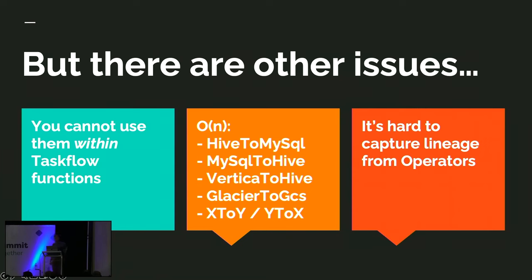Then we have kind of a big-O problem too. We have a myriad of operators called Hive to MySQL, MySQL to Hive, Vertica to Hive, Glacier to GCS, GCS to Glacier — essentially X to Y, and Y to X. That creates, interestingly enough, what you would assume — because if you looked at why we did operators — a kind of standardization around how those operators function. They don't. That's the spoiler. You probably know it. You need to look into the code, because the definitions are not well done for those 1,541 operators.